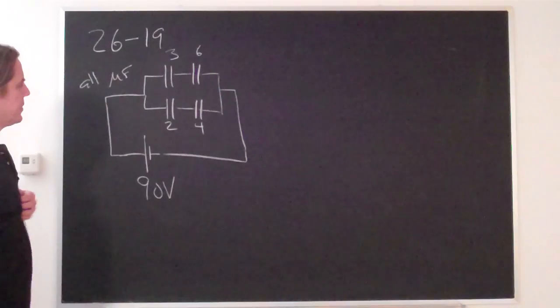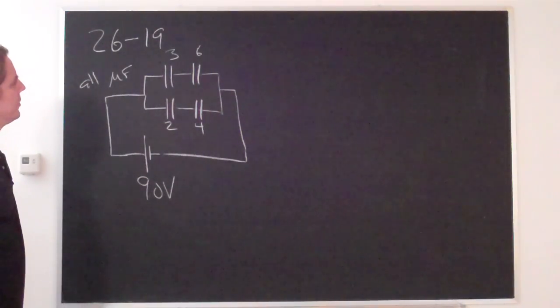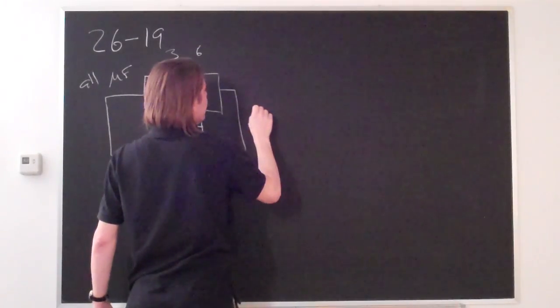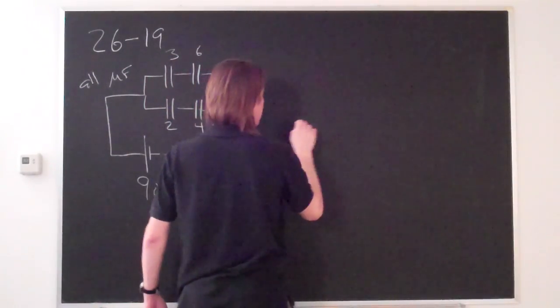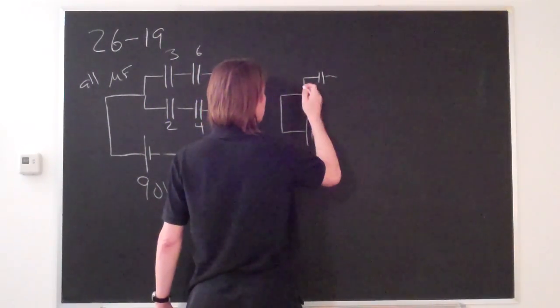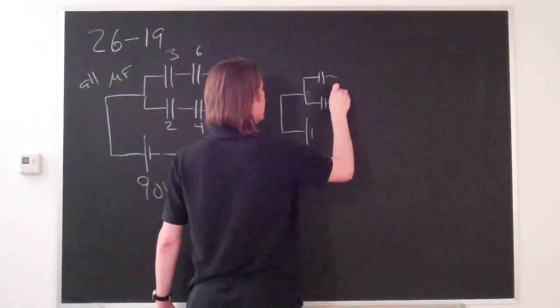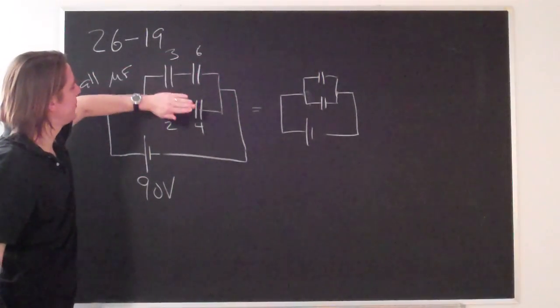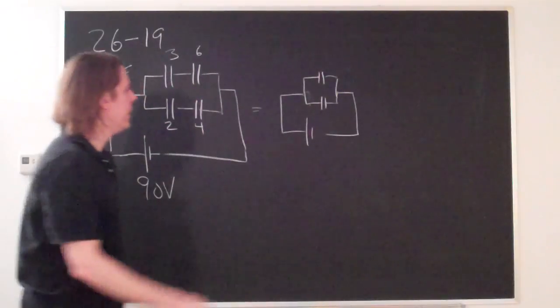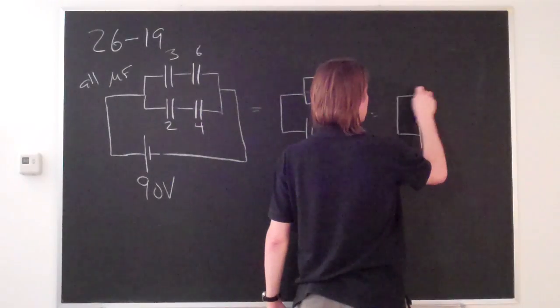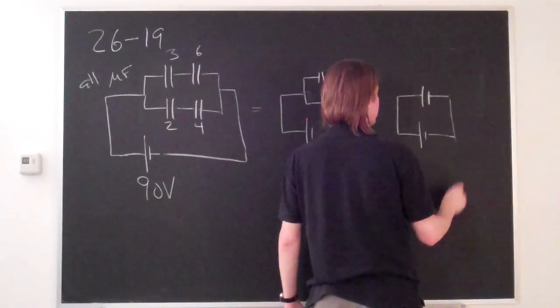There are several questions. The first question is simply: what is the equivalent capacitance of this whole thing? To get that, you need to first realize that this is basically equal to this circuit. Let's say we can add these two as an equivalent capacitor and these as an equivalent capacitor and draw it like that.